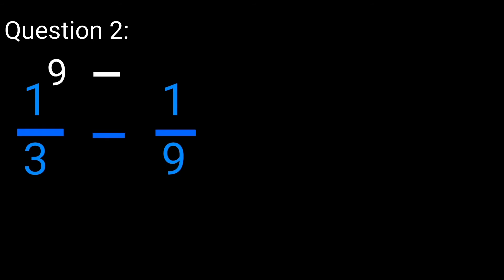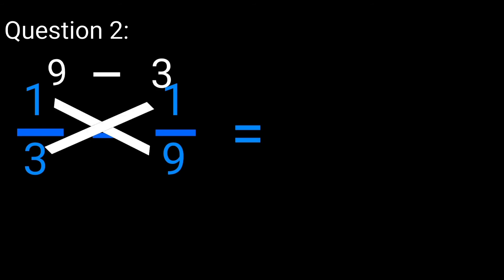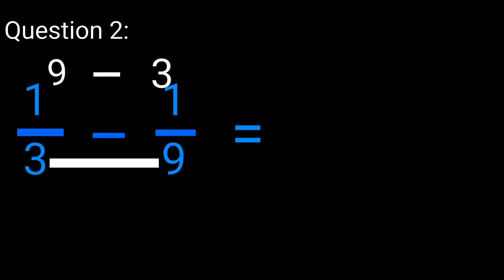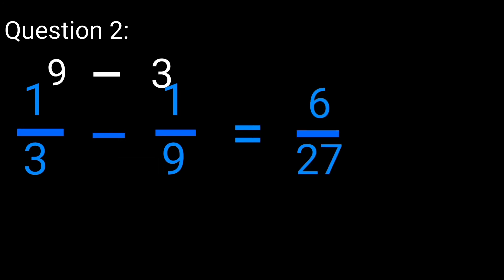You write it down and then say top right multiplied by down left. That is 1 times 3, which is 3. You write it down. Then you multiply the two denominators, that is 3 times 9, which is going to give you 27. Now 9 minus 3 is going to give you 6, so the answer here is 6 over 27.